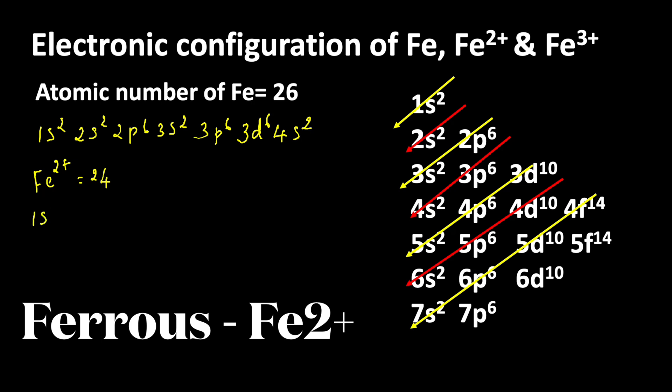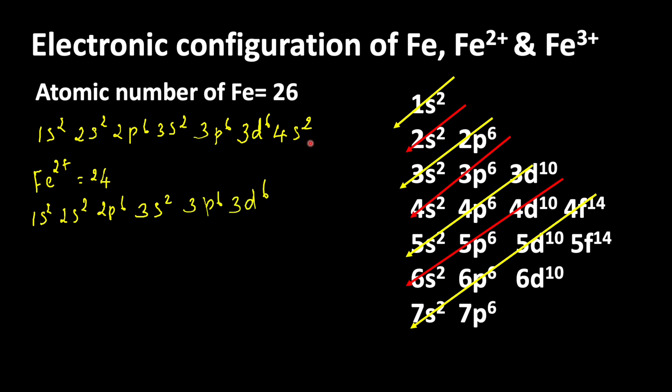So we can write 1s2 2s2 2p6 3s2 3p6 3d6. In iron, 4s is the outer shell orbital. So electrons are lost first from the outer shell.